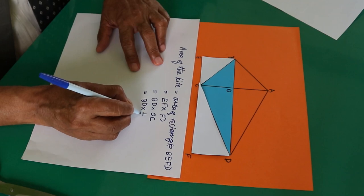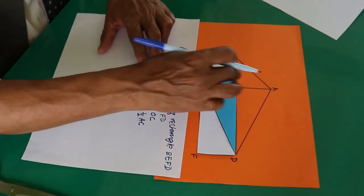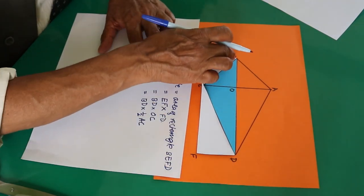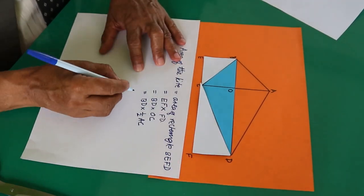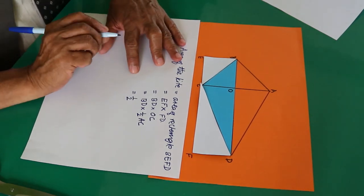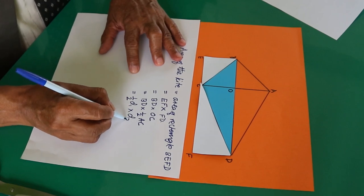OC is half of AC because I had explained you this line has to be drawn from the midpoint of this line segment. Now half comes to the front as the coefficient. BD is diagonal 1 and AC is diagonal 2.